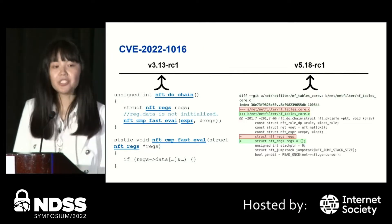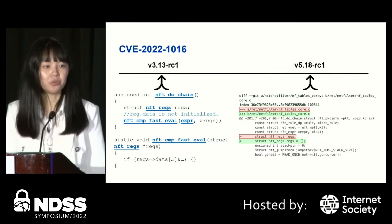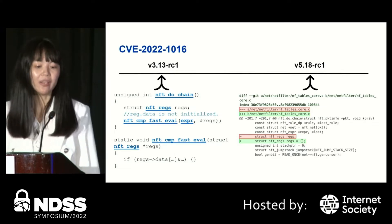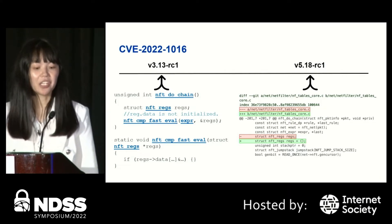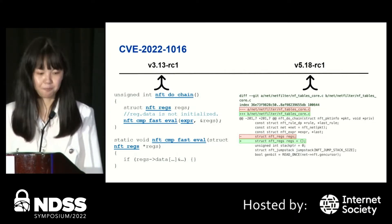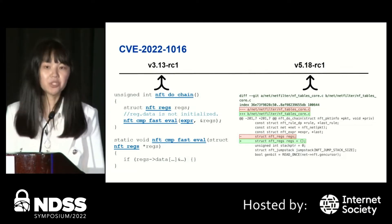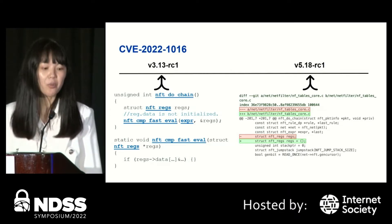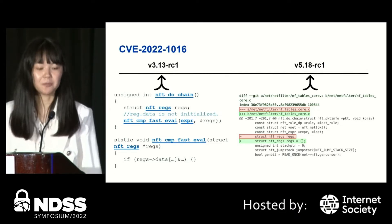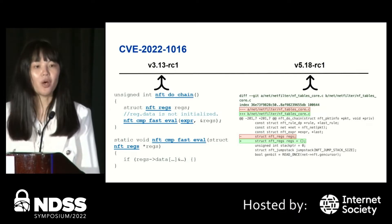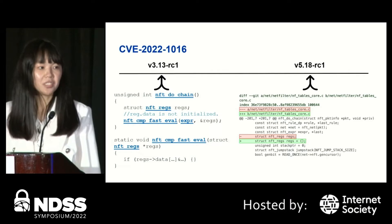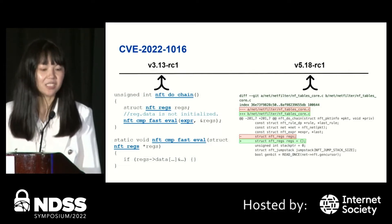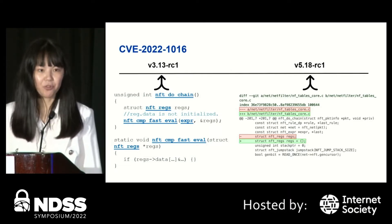This vulnerability was merged in version 3.13 RC1 and recently got patched, giving adversaries ample time to discover and exploit such vulnerabilities. So wouldn't it be nice if we could catch this bug before it is merged into the kernel?